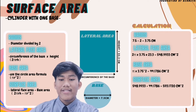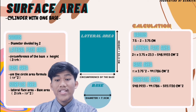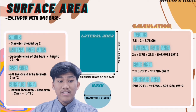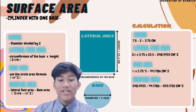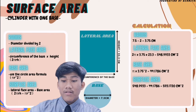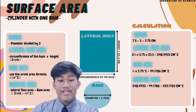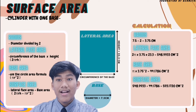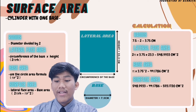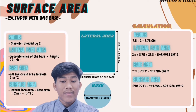The first step is to find the radius. Given that the diameter is 7.5 cm, we divide by 2 to get the radius: 7.5 ÷ 2 = 3.75 cm. To find the lateral face area, we use the formula circumference of the base multiplied by height, which is 2πrh. With r = 3.75 cm and h = 23.3 cm, the lateral face area = 2π × 3.75 × 23.3 = 548.9933 cm².